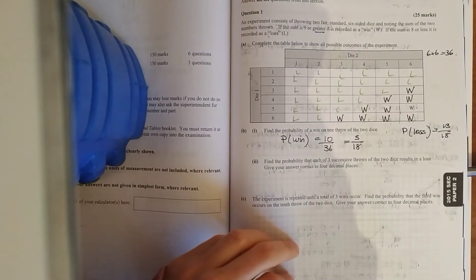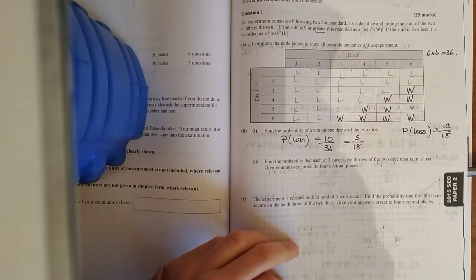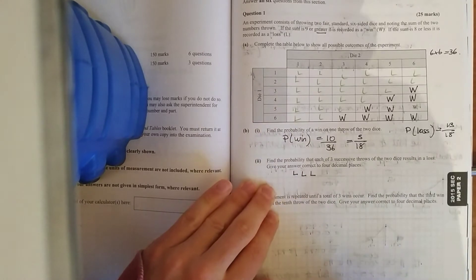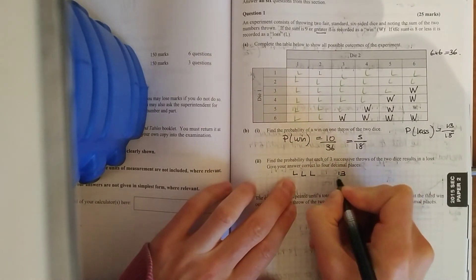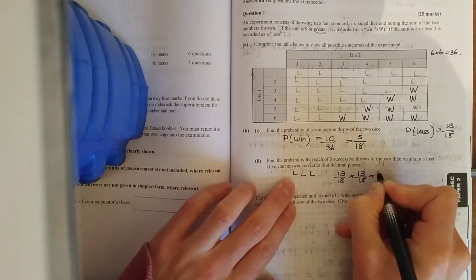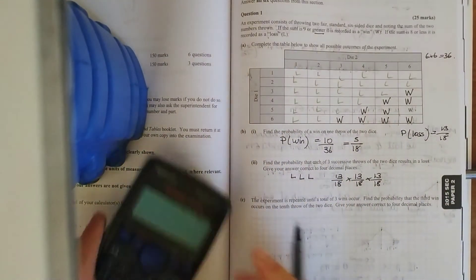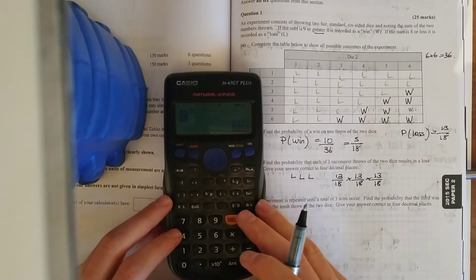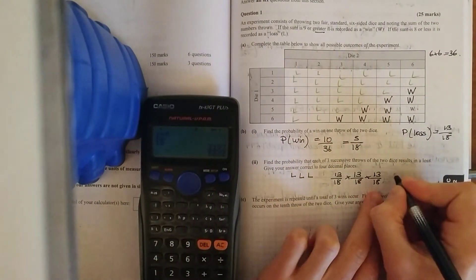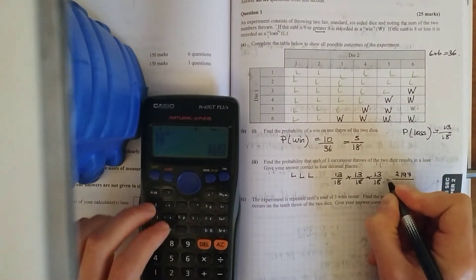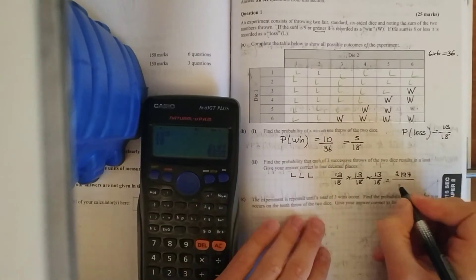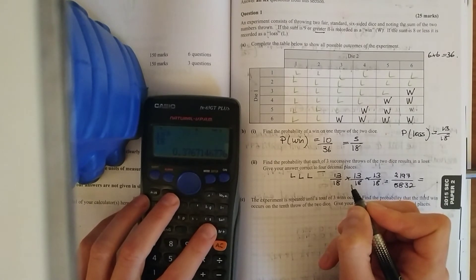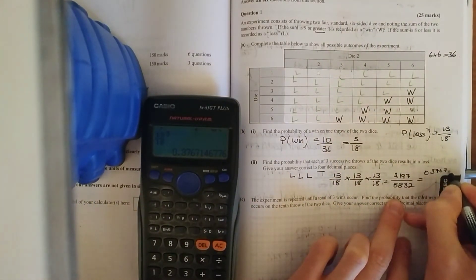Find the probability that each of the three successive throws of the two dice results in a loss. So find the probability of losing, losing, losing. So as you said, the probability of loss, 13 out of 18 and losing, multiply, 13 out of 18 and losing, 13 out of 18. 13 over 18 to the power of 3. And it does say four decimal places. So standard form button 0.3767. That's the answer they want you to use.